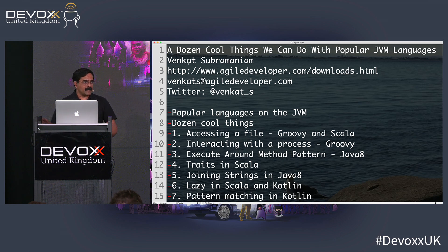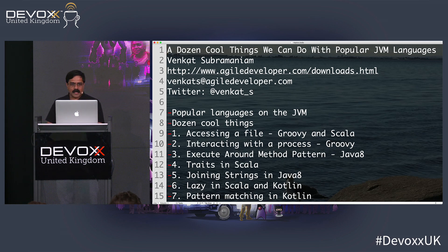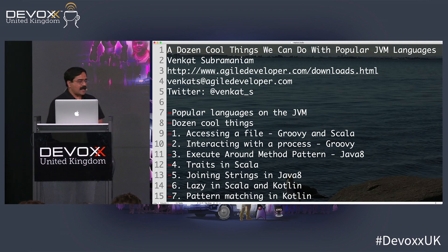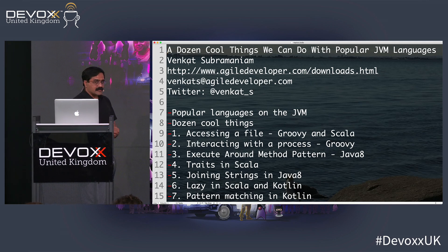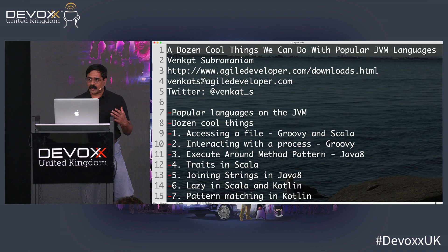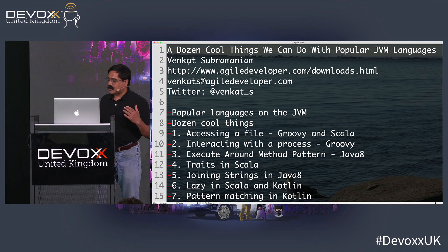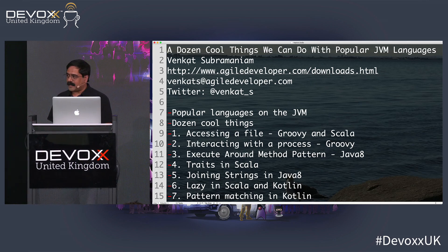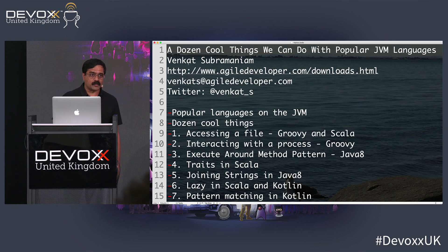All right. Well, thanks for coming. Let's get started. We're going to talk about a dozen cool things we can do with popular JVM languages. One of the things I look at is languages as vehicles — there are bicycles, there are rockets, there are airplanes, and absolutely we need all of them. I see languages to be similar to that.